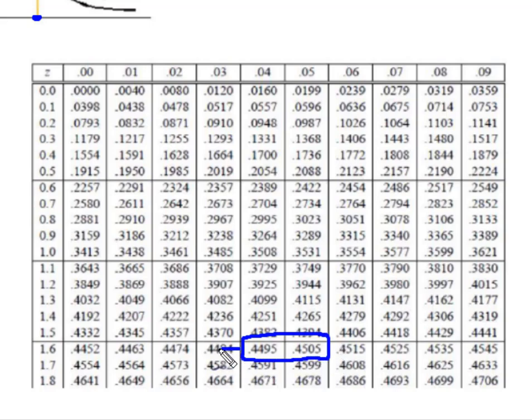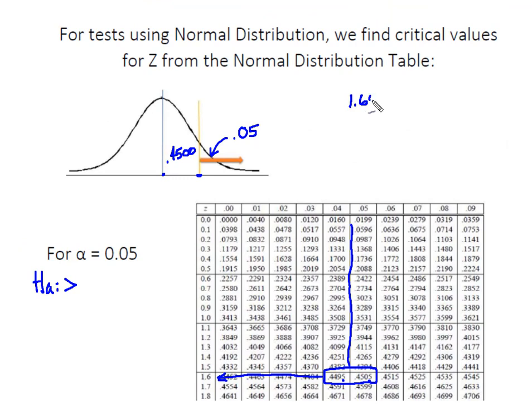When I move back out in my distribution table, I see that gives me 1.6, and because these are exactly the same distance apart, I'm going to split the difference and take the average of 1.64 and 1.65, which is going to give me a critical value equal to 1.645.